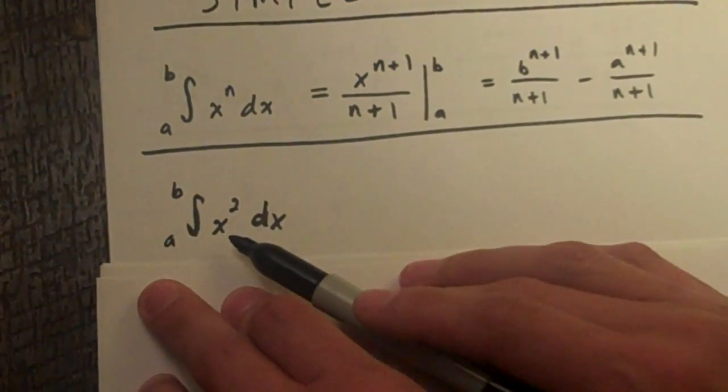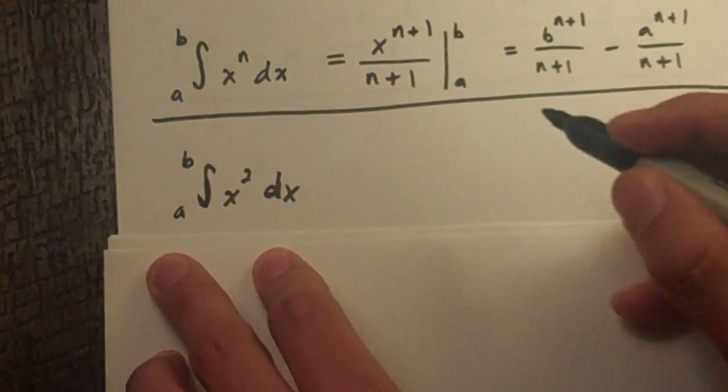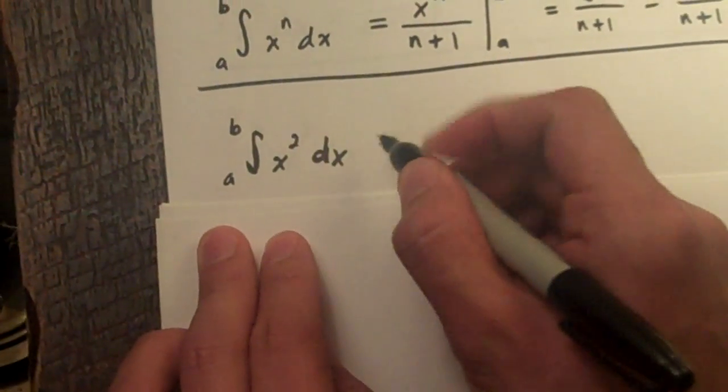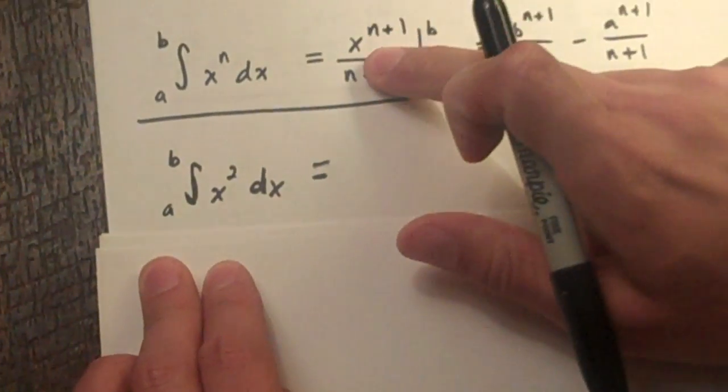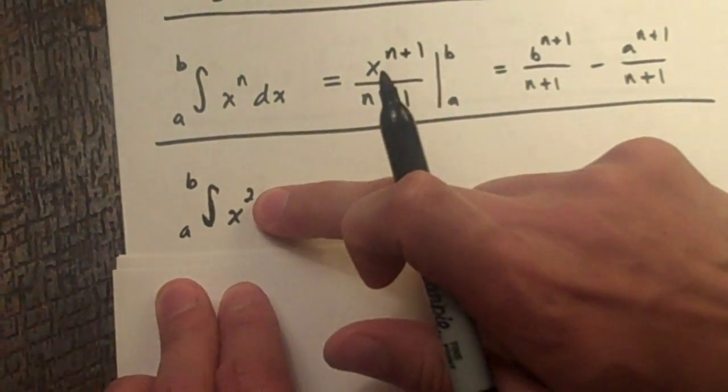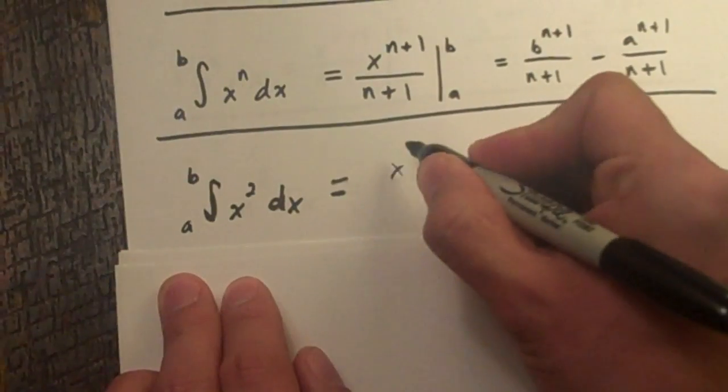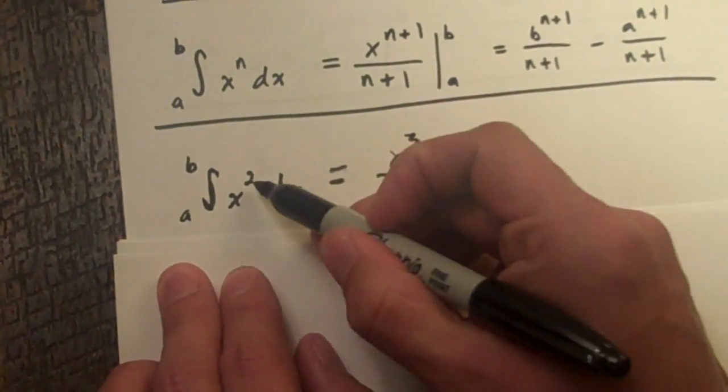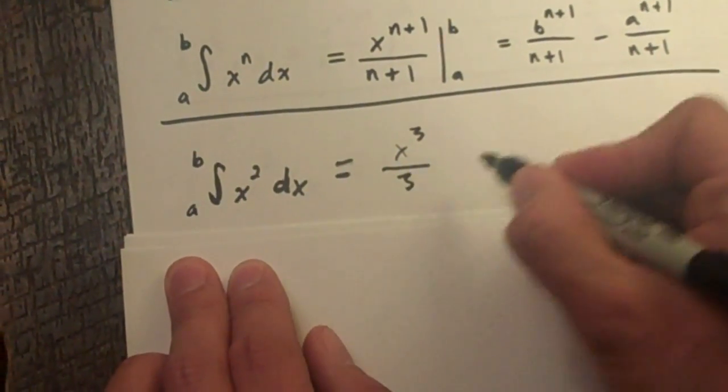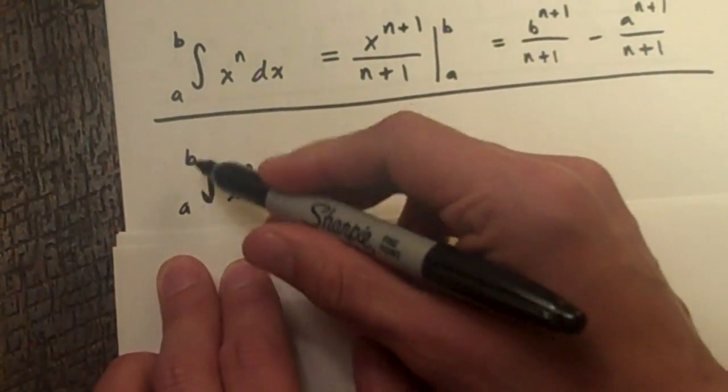So first we'll start with the function x squared. What we do as seen above, you take x to the n plus 1. So right here our n is 2, so we're going to take x to the 2 plus 1 which is 3, all over n plus 1, and 2 is our n, so all over 3 from a to b.